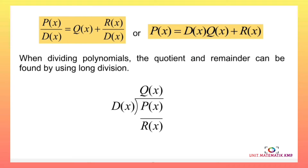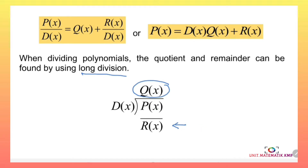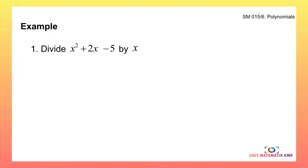When dividing polynomials, the quotient and remainder can be found by using long division. p(x) divided by d(x) gives the quotient above and the remainder at the bottom. Let's see the first example: we want to divide x squared plus 2x minus 5 by x.